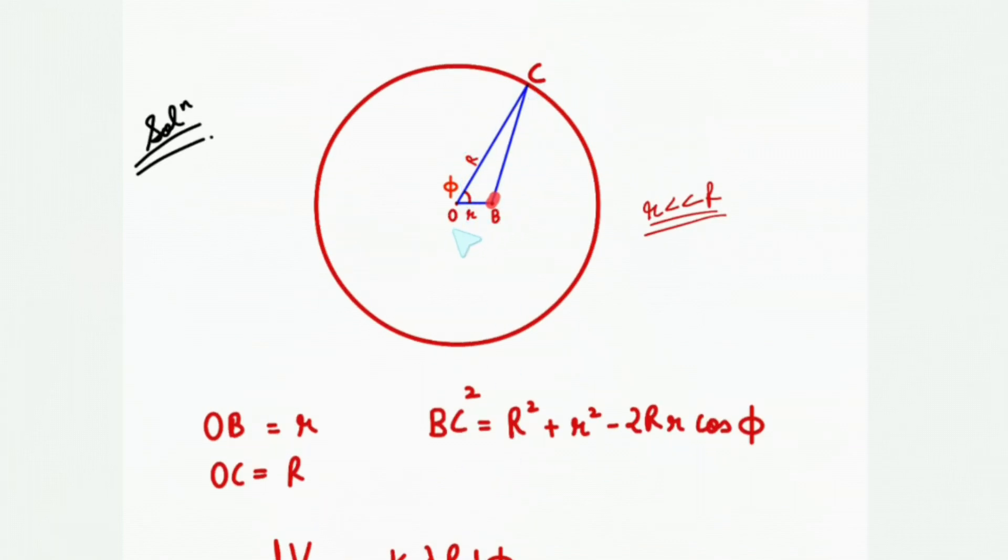That is capital R square plus small r square minus two capital R into small r into cos of angle between them, that is cos phi. So we'll get dV.